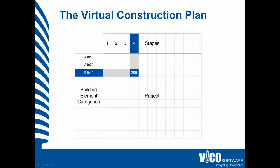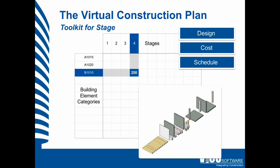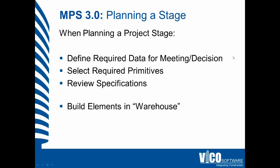So for stage 4, for the B1010 building element category, we want to be at level of detail 200, which will require a certain class of model, a certain class of estimate, and a certain class of schedule. We can then pick the primitives we would like to use and implement a kit of parts to reach that desired level of detail. We'll develop a toolkit for each of the stages, which includes design, cost, and schedule information.